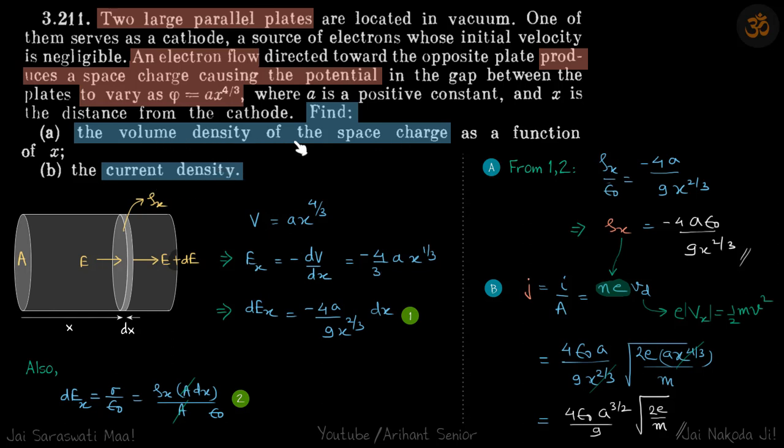See why there will be a space charge at all. So you see v here, v is given as a function of x. And from here you can see that electric field will also be a function of x because potential is not a linear function of x.